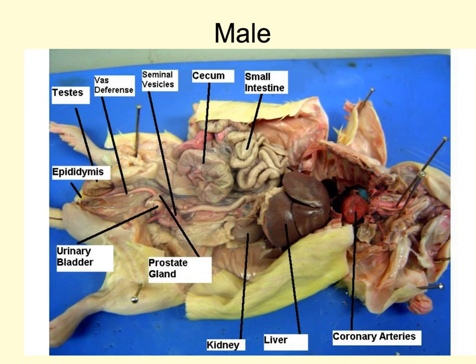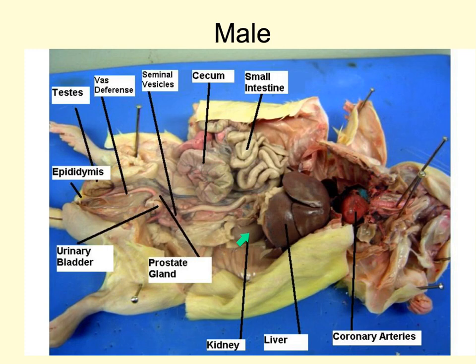In this final overview of internal structures we can see the heart, the trachea, and the liver — remember the rat does not have a gallbladder. We can see the small intestines, the stomach, the cecum, the seminal vesicles, the vas deferens, and the testes with the epididymis on top. The urinary bladder is visible, and here is the kidney — from which the ureter runs down to the bladder. Remember that the kidney is retroperitoneal.